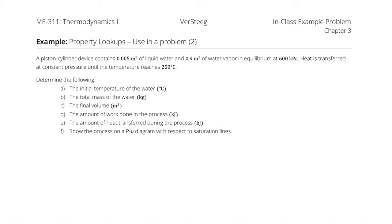A piston-cylinder device contains 0.005 cubic meters of liquid water and 0.9 cubic meters of water vapor in equilibrium at 600 kilopascals. Heat is transferred at constant pressure until the temperature reaches 200 degrees Celsius. Determine: A) the initial temperature, B) the total mass of water, C) the final volume, D) the amount of work done, E) the amount of heat transferred, and F) show the process on a PV diagram with respect to saturation lines.